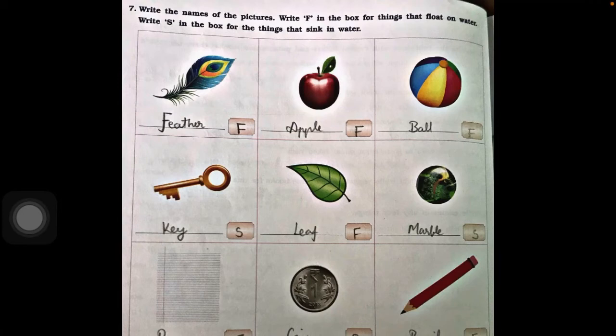The second picture is an apple — apple easily floats on water, so we write F. Then ball — ball easily floats on water, so we write F. Now key — key can easily sink in water, so we write S.